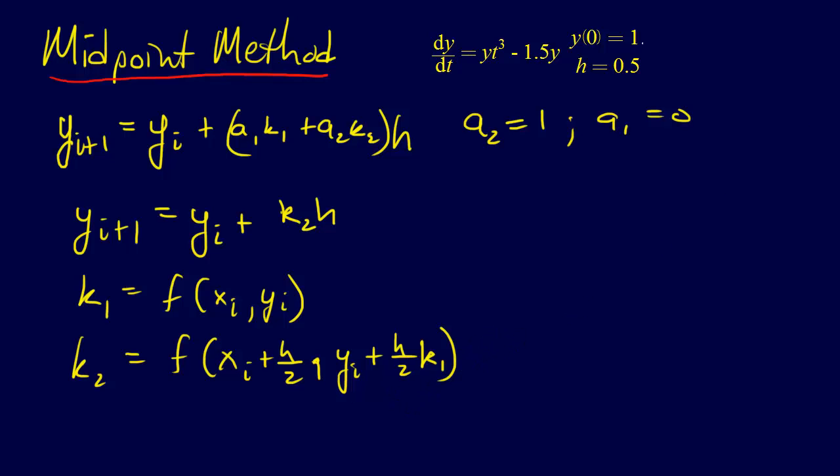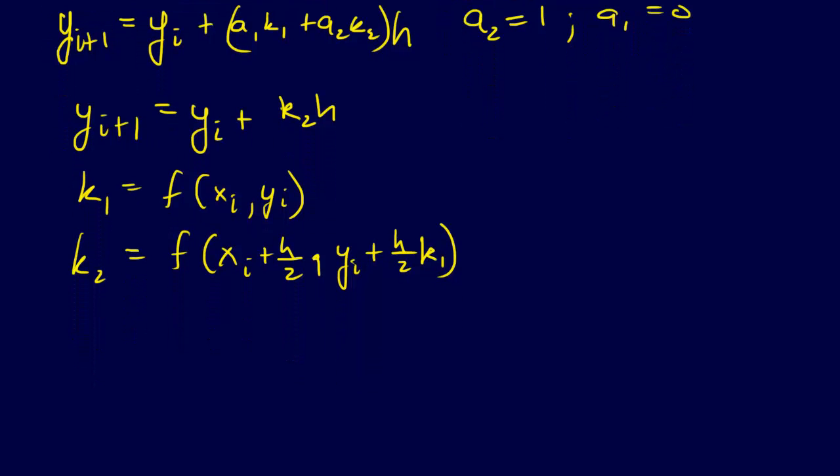So we can go ahead and go through an example using our actual value. So to start out with, we have Y0 equals 0, and so we're going to have K1 equals Y0 T0 cubed minus 1.5Y0, and so that is equal to 1 times 0 cubed, because the initial time is 0, minus 1.5 times 1. So K1 is going to equal minus 1.5.